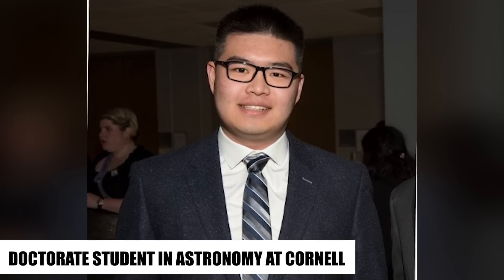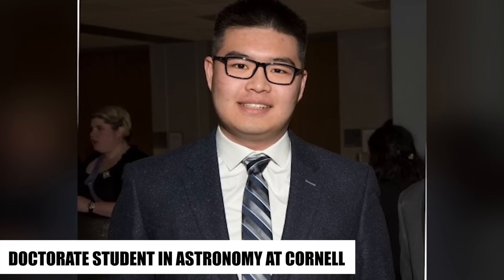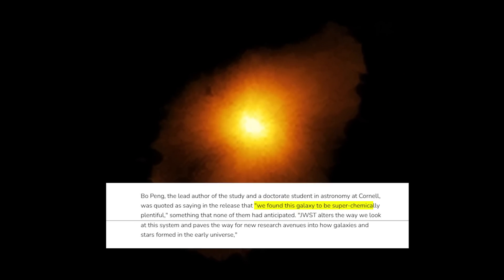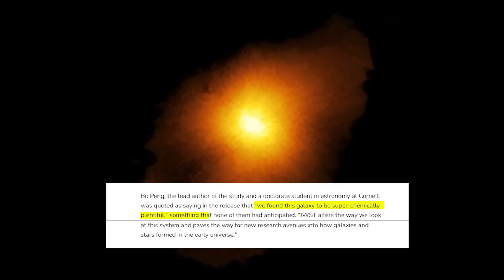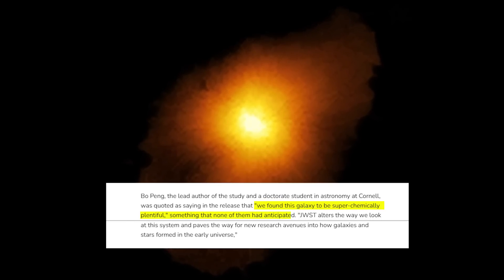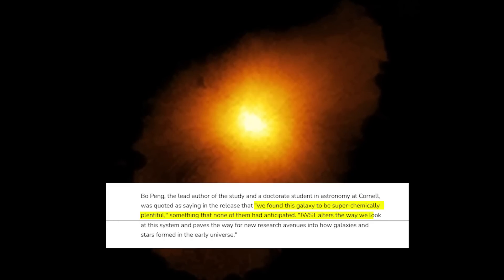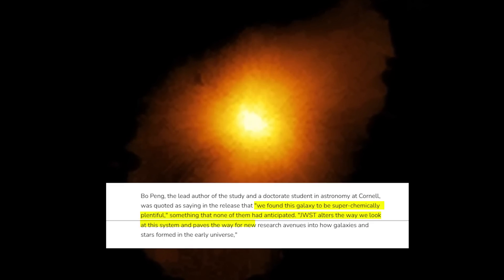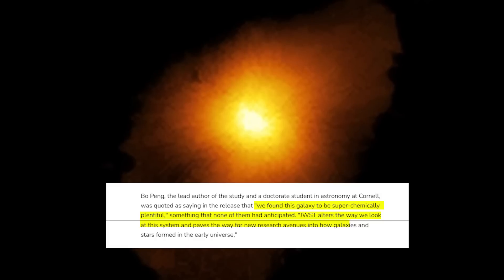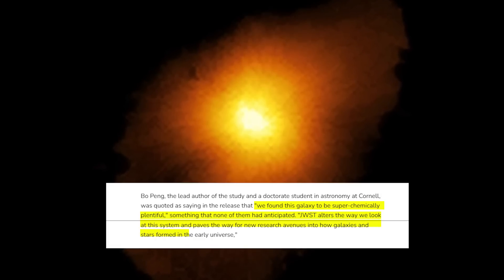Bo Peng, the lead author of the study and a doctorate student in astronomy at Cornell, was quoted as saying in the release that we found this galaxy to be super-chemically plentiful, something that none of them had anticipated. The JWST alters the way we look at this system and paves the way for new research avenues into how galaxies and stars formed in the early universe.